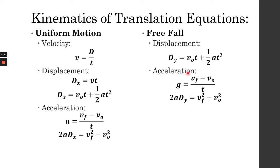In freefall, we use the acceleration due to gravity, which is g, equal to negative 9.8 meters per second squared. That is the acceleration for freefall. We can use these equations to get the displacement in y. I hope you guys remember these equations because for projectile motion, we'll be using a lot of them today.